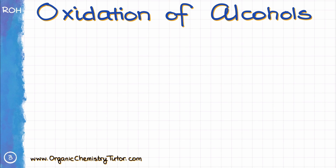Before we dive into the reactions themselves, I want to make sure you have a firm grasp on what oxidation means to begin with. Oxidation refers to the formal loss of electrons. Since we are dealing with covalent compounds in organic chemistry, we are not going to see a complete transfer of electrons from one element to another. Rather, we are going to see the formation of new chemical bonds that will make atoms more or less electron-rich.